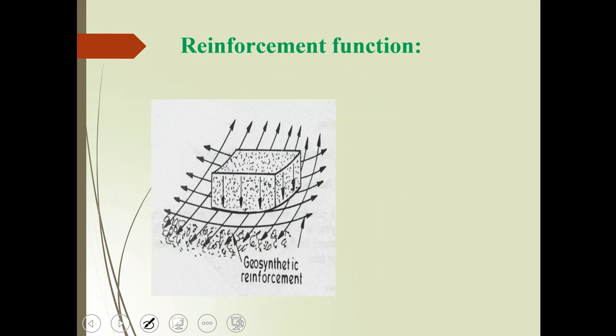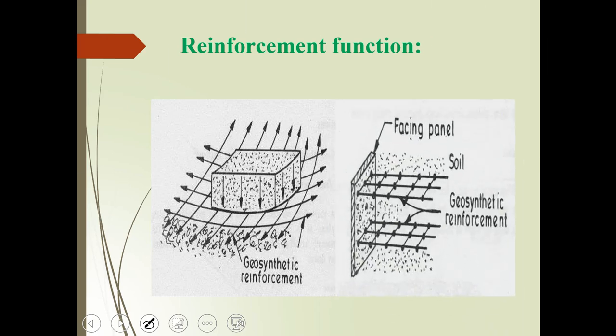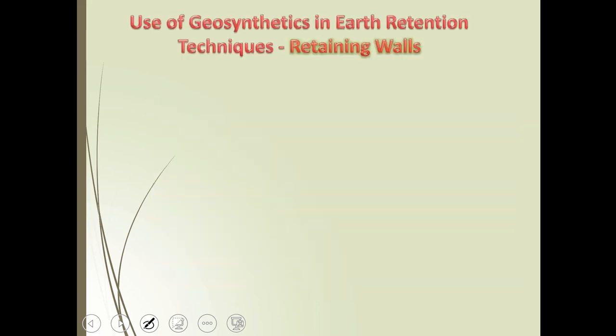The reinforcement function: we know the difference between PCC (plain cement concrete) and RCC (reinforced cement concrete). We use RCC because it has reinforcement, giving it strength in both compression and tension. Similarly, we can use reinforcement in soil mass — this is one kind of improvement. Geosynthetics mean improvement of the soil mass using artificial materials.